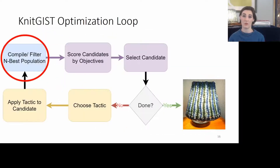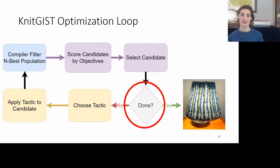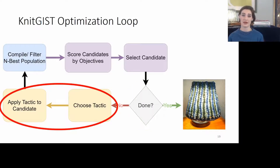We then go into the optimization loop, where a population of the N best randomly generated textures is maintained. We score each candidate based off of our objectives, and then select a candidate with a bias towards the one that is currently performing the best. We don't necessarily select the top performer, so that we can quickly jump around the search space. If the candidate is good enough, we move on and knit our object. If not, we choose a tactic and apply it to the candidate to create a new texture, which we feed into the population.